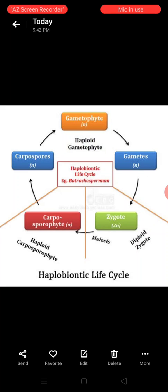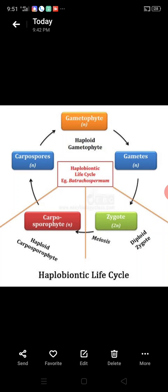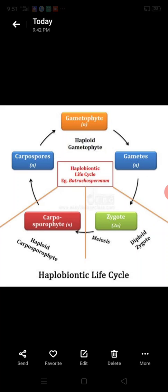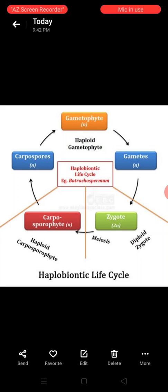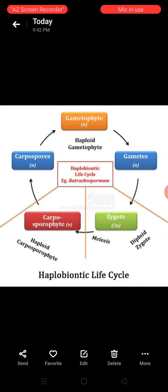The nucleus of the zygote undergoes meiosis, producing haploid nuclei. These haploid nuclei then repeatedly undergo mitotic division and form a small, branched and filamentous structure called the carposporophyte. This carposporophyte is still attached to the gametophyte — it is not a separate, independent phase.